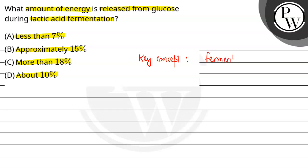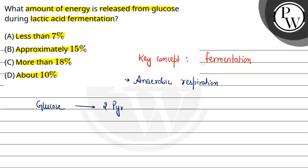Fermentation anaerobic respiration ka part hai — yani ye reaction in the absence of oxygen hoti hai. Aur yahan pe sabse pehle hoti hai glycolysis, jisse glucose convert ho jaata hai into two molecules of pyruvic acid. Aur phir ye pyruvic acid ya toh lactic acid ki formation karta hai in the presence of lactate dehydrogenase — ise kehte hain lactic acid fermentation — ya phir ye ethanol ki formation karta hai in the presence of pyruvic acid decarboxylase and alcohol dehydrogenase, aur ise kehte hain alcohol fermentation.